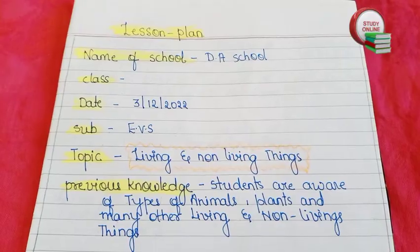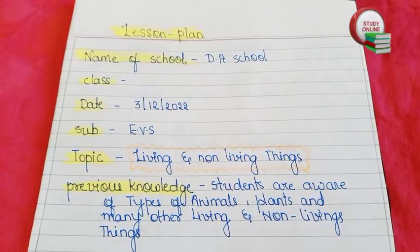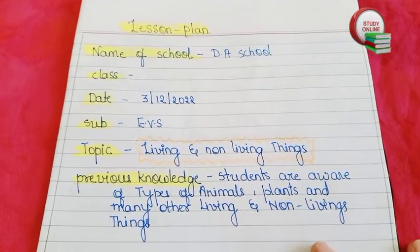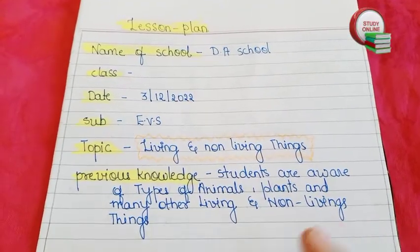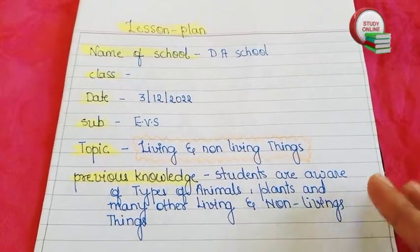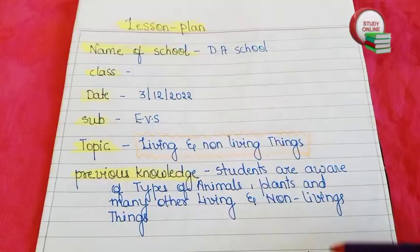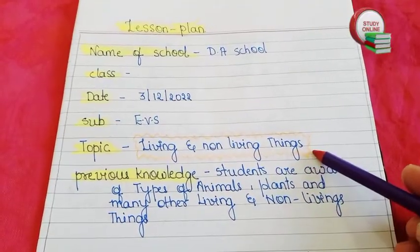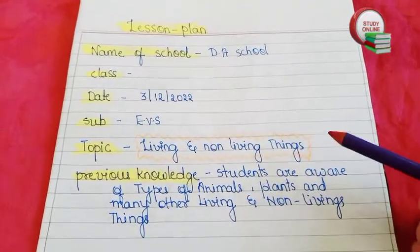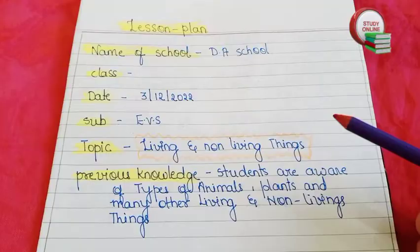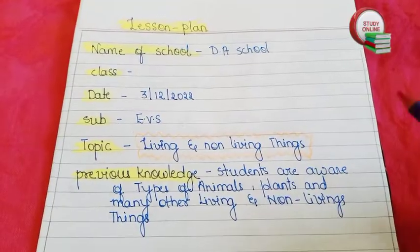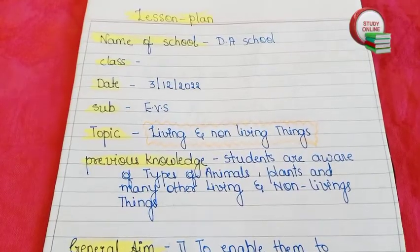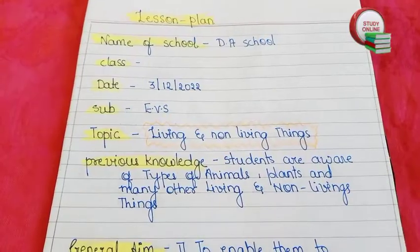Hello everyone, welcome back to my channel Nootan Online Study. Today in this video we are going to see how to make a lesson plan format, and our topic would be living and non-living things. This is for Class 3. You can see here how we have to make this lesson plan.